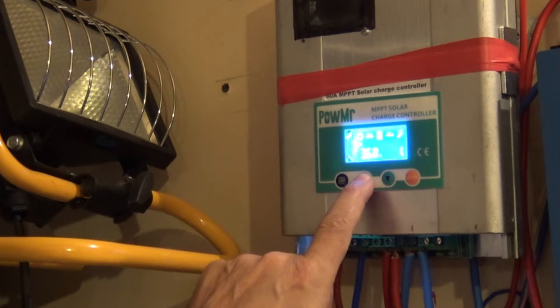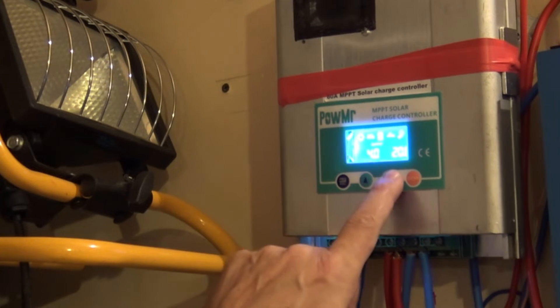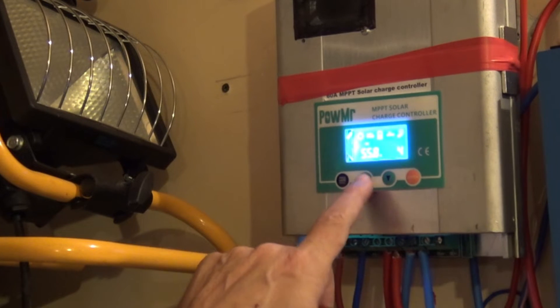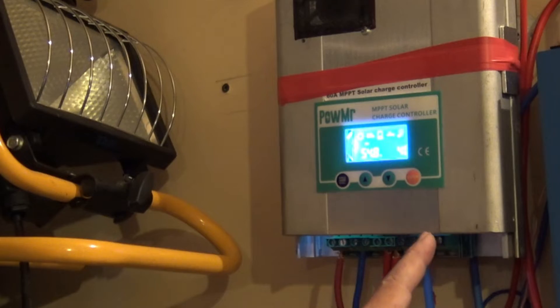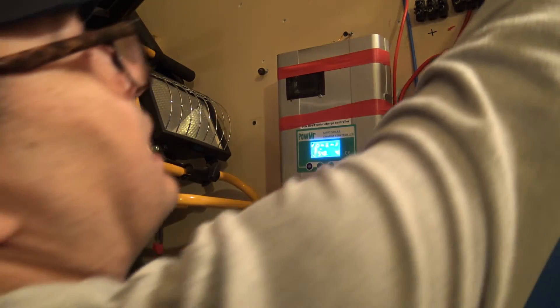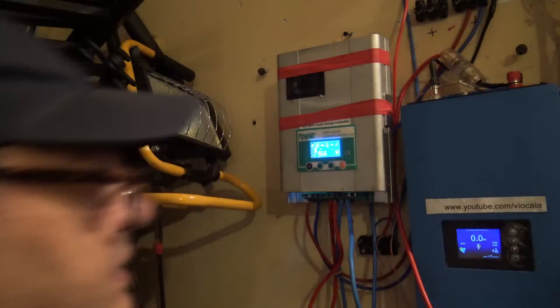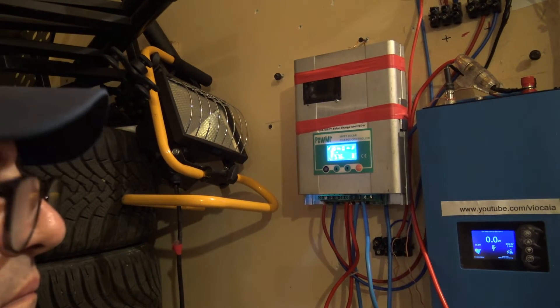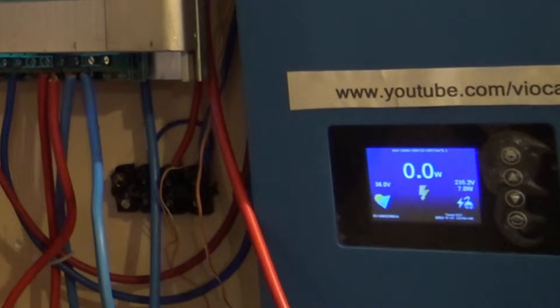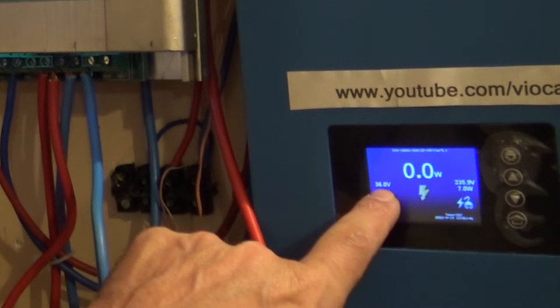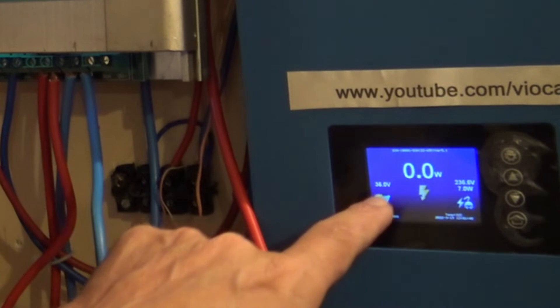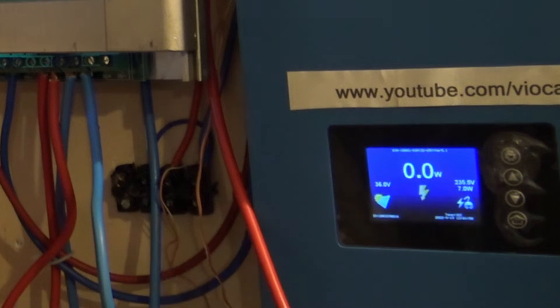But the point is that this MPPT is keeping the voltage pretty high, it's 55.5 volts. Okay, now simply let's connect the inverter. 36 volts input, obviously that's from the batteries. The batteries are not charged.